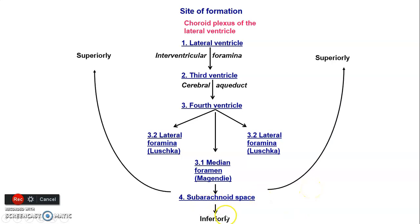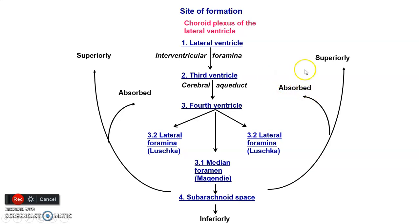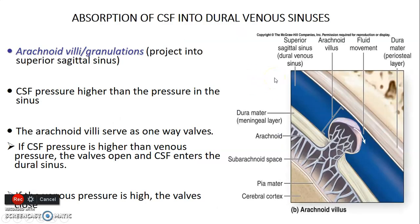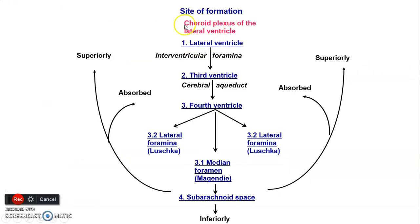CSF can also continue inferiorly into the central canal of the spinal cord. If it goes to the subarachnoid space, it circulates on the superior portion of the brain. If it goes inferiorly, it enters the central canal of the spinal cord. The CSF that goes superiorly will be reabsorbed at the arachnoid granulations at the superior sagittal sinuses. It can also continue inferiorly into the subarachnoid space of the spinal cord and the central canal of the spinal cord.